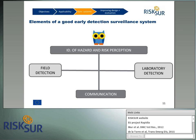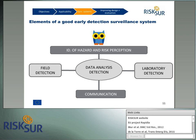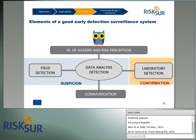Any surveillance system for infectious diseases is composed of field and laboratory detection components. Both field and laboratory early detection are very much influenced by the risk awareness derived from risk perception and knowledge of the hazard, as well as by the communication that happens between field, laboratory, and decision makers. The analysis of data for detection purposes has increased over the last decades, particularly since the upsurge of new and emerging diseases worldwide. For early detection purposes, both field detection and data analysis detection constitute the suspicion of a disease, while confirmation is necessary in the laboratory.